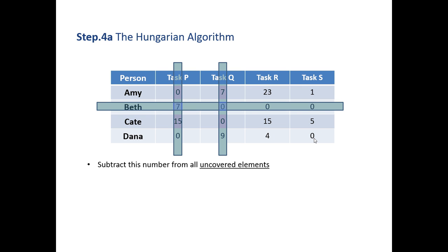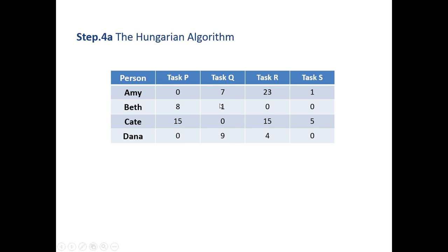Now our next step is to deal with the covered numbers. We actually look at where there's an intersection. So number seven here, there's an intersection of two lines, and zero, there's an intersection of two lines. So what we do is we add the minimum number to those intersection points. The minimum number was one that was uncovered originally, so we add 1 to 7 and 1 to 0. That now changes those numbers to an 8 and a 1. Now that is the Hungarian algorithm.